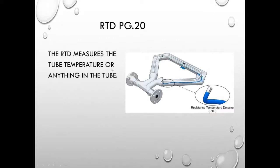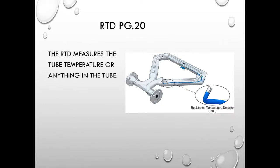The RTD measures the tube temperature or the temperature of anything in the tube. It is also used as an indicator for compensation of temperature's effects on the physical properties of the construction material. Colder temperatures make the metal more stiff; warmer temperatures make it more flexible. The RTD compensates for that as well, not just for the density of the flowing medium.